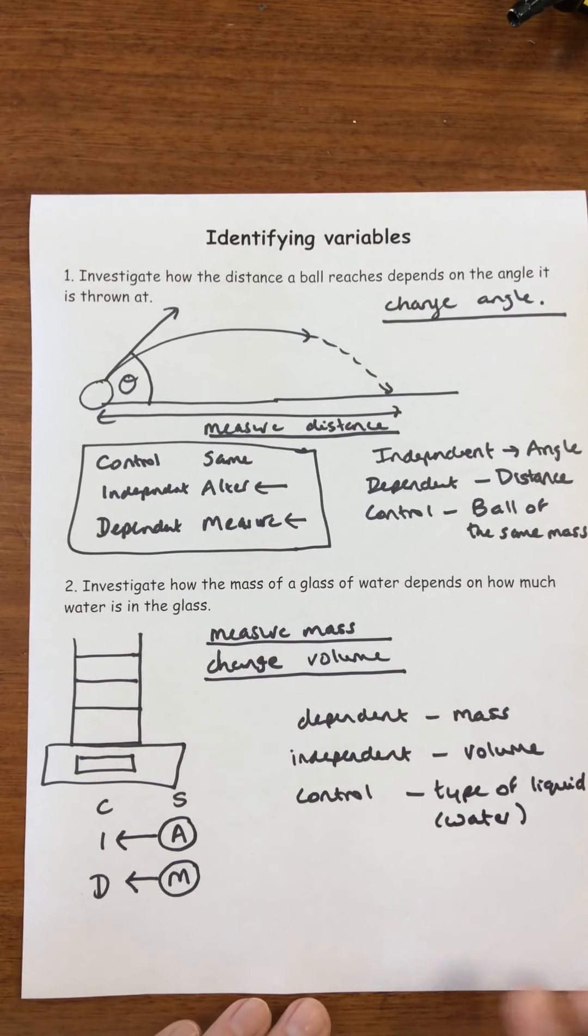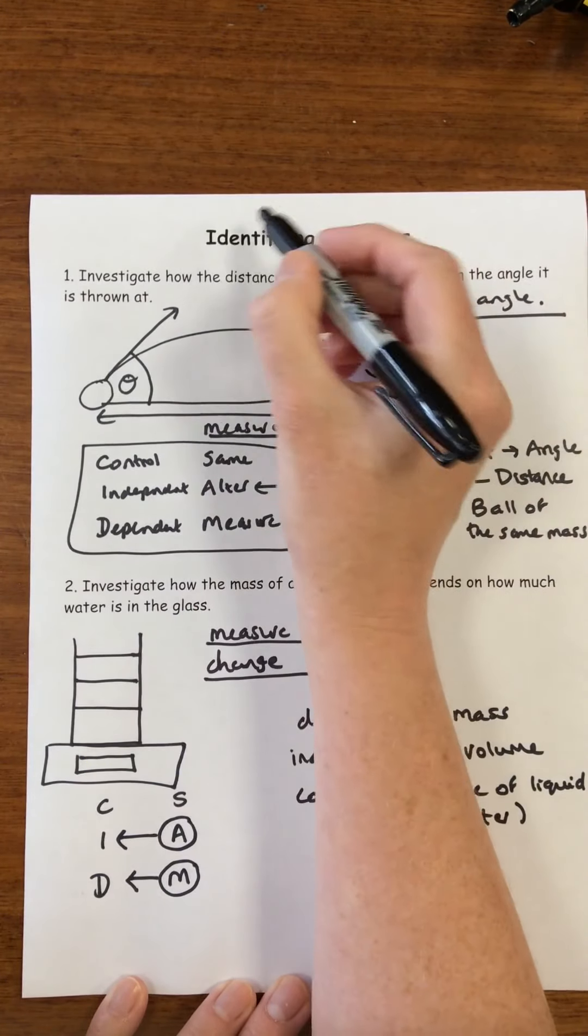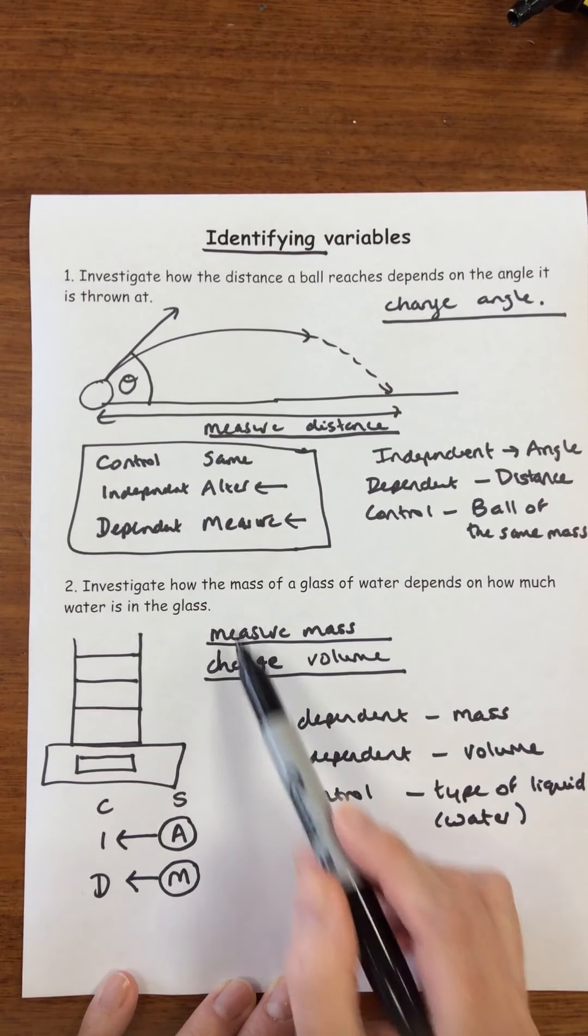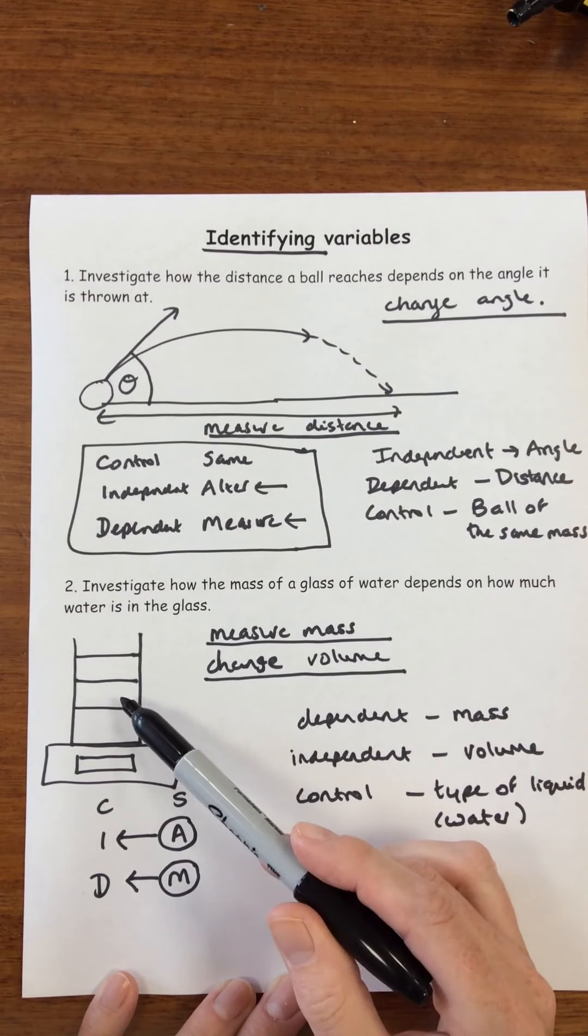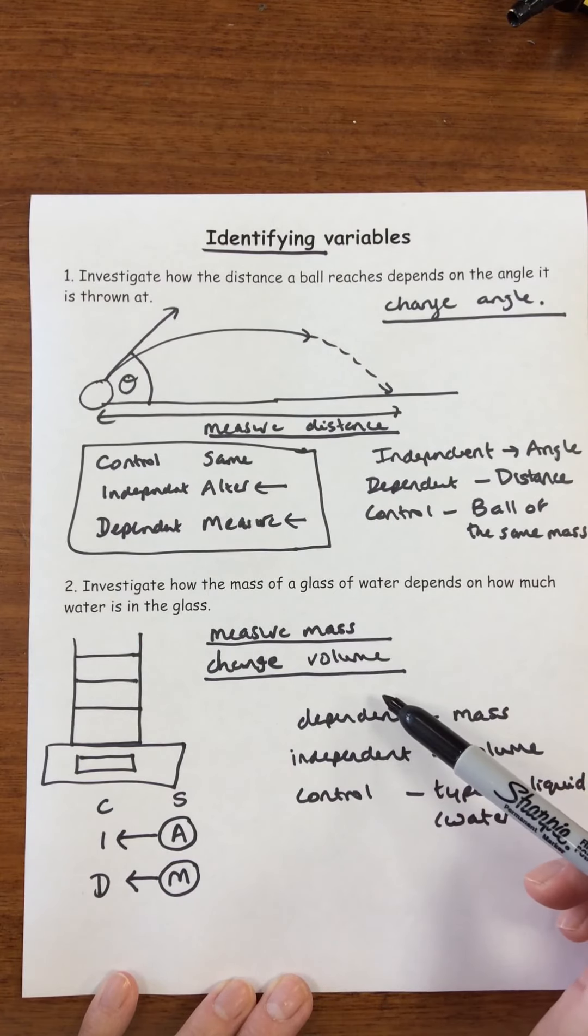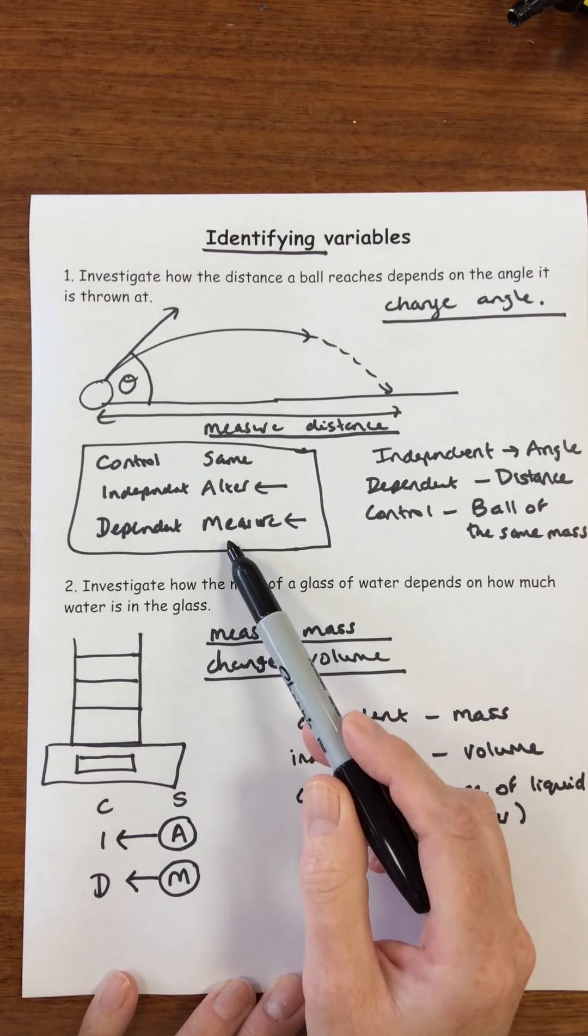So just a reminder, if you come across a question where it says identify the variables, remember we're identifying the variables, then you need to think about the actual investigation. First of all, write down some notes, even do a little sketch to help you decide what you're going to measure, what you're going to change, and then finally what you're going to control. Use Sid and Sam to help you.